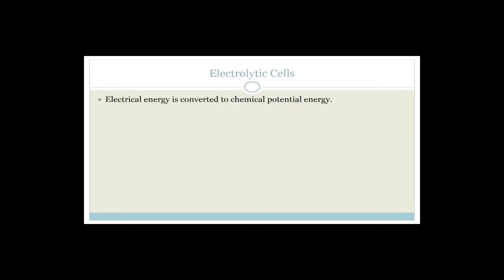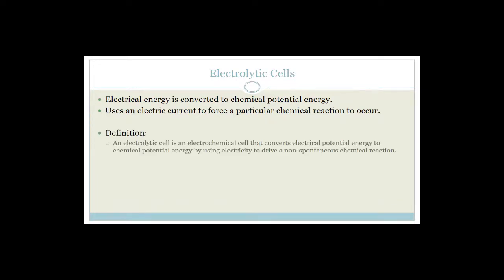So, electrolytic cells. First of all, the electrical energy is converted to chemical potential energy. For galvanic cells, it was chemical energy to electrical energy - think galvanic, voltaic, battery. For electrolytic cells, we need electricity to make it work. So it uses an electric current to force a particular chemical reaction to occur.